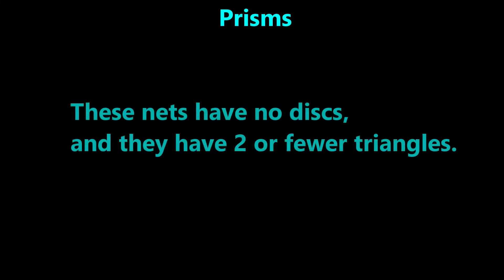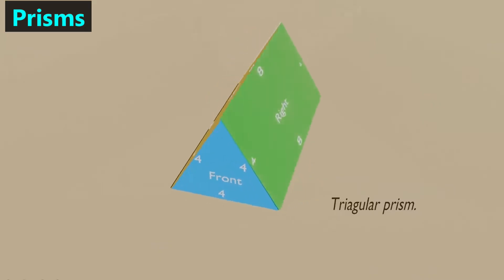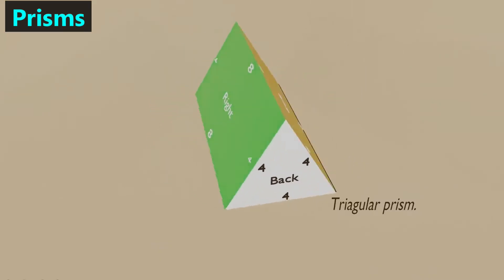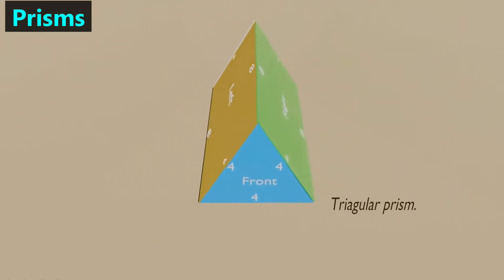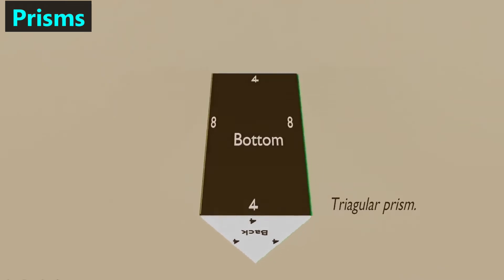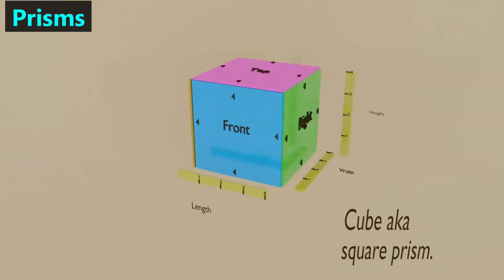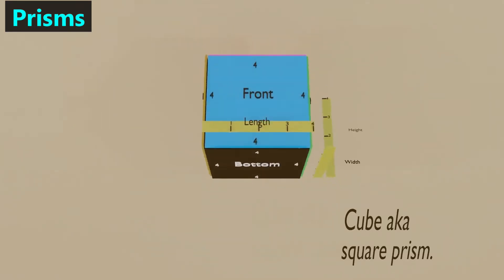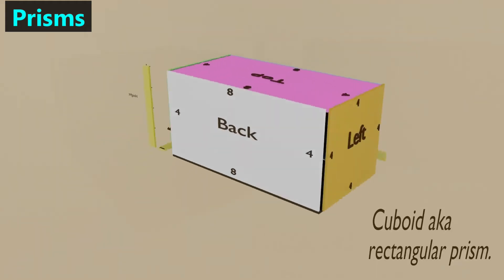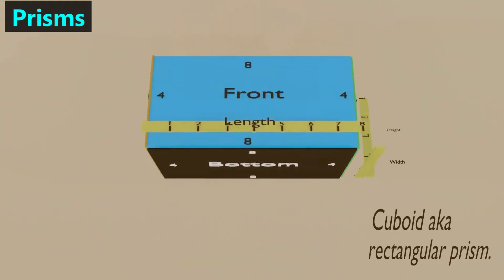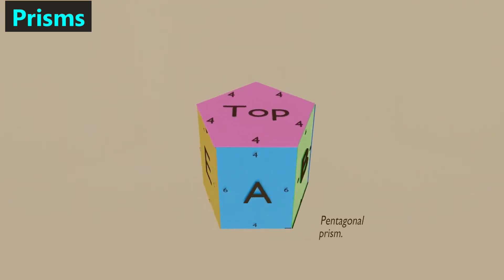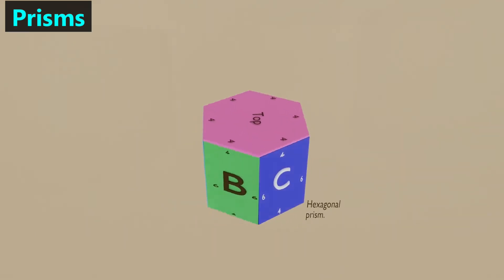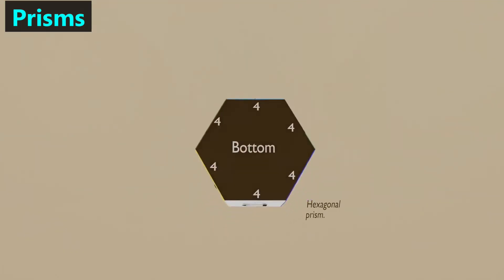The next category is prisms. This category is made up of nets that have no disks and they have two or fewer triangles. For example, a triangular prism has two triangles but only two, whereas a pyramid has more than two triangles, and it has no disks. A square prism — the most famous example being a cube — has no faces made of disks or triangles. The same is true for rectangular, pentagonal, and hexagonal prisms.